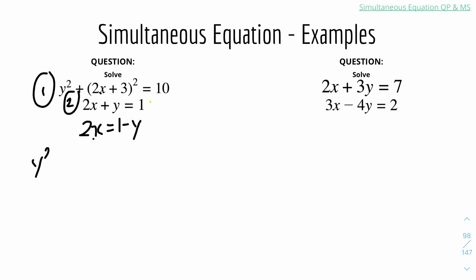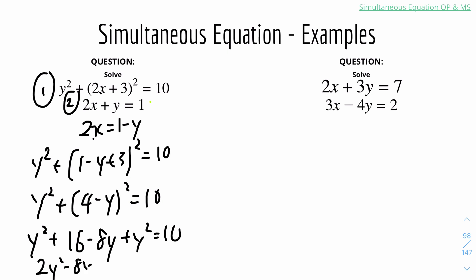Then you can substitute 2x. So it will be y squared plus 1 minus y plus 3 squared equals 10. Rearrange the equation to get y squared plus 4 minus y squared equals 10. Then expand the bracket to get y squared plus 16 minus 8y plus y squared equals 10. And therefore it will be 2y squared minus 8y plus 16 equals 10.